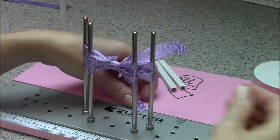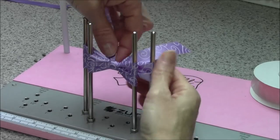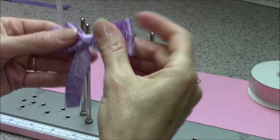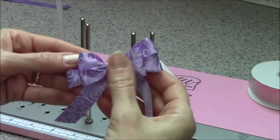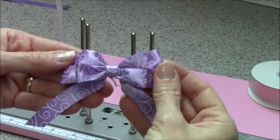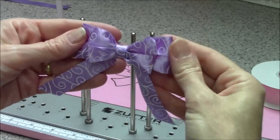Trim your tails, slide your bow off, and there's your little double layered bow. I just love that swirled satin, it's so pretty.